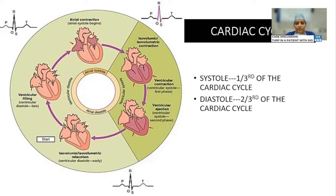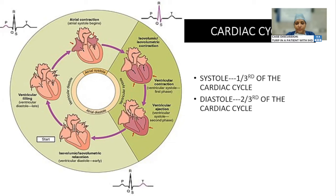In the cardiac cycle, systole lasts about one-third of the cycle (approximately 0.3 seconds), and diastole lasts about two-thirds (approximately 0.5 seconds). The lengthier diastole contributes to coronary blood flow, and left ventricular filling occurs during diastole. Therefore, any clinical condition that increases heart rate reduces the time for filling, reduces left ventricular ejection fraction, and also reduces coronary blood flow.